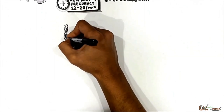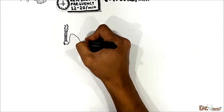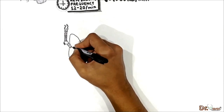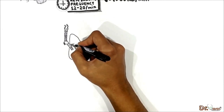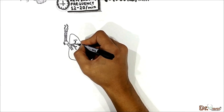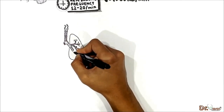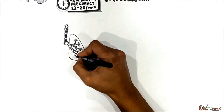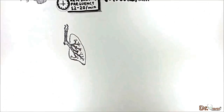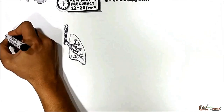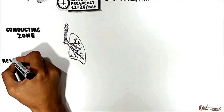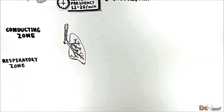It is extremely important to note that not all air from this 7500 mils reaches the alveoli and is involved in gas exchange. Some of the air stays in the conducting zone of the lungs. There are two zones in the lung system: the conducting zone and the respiratory zone.